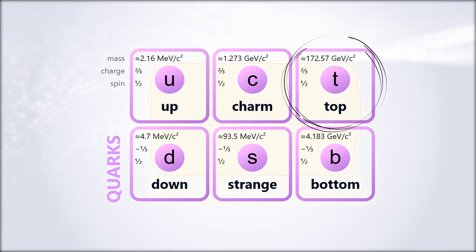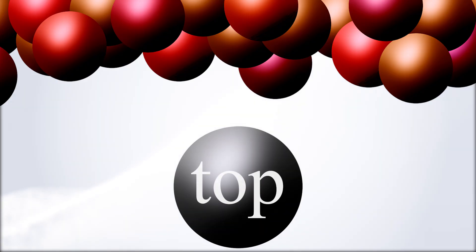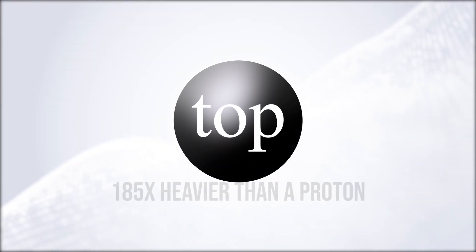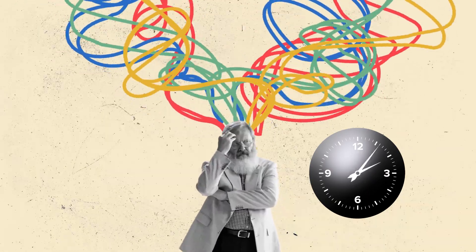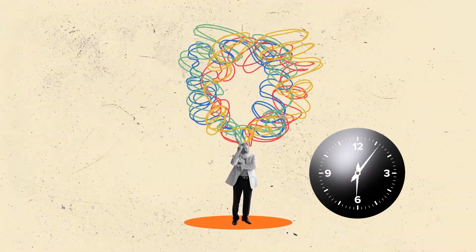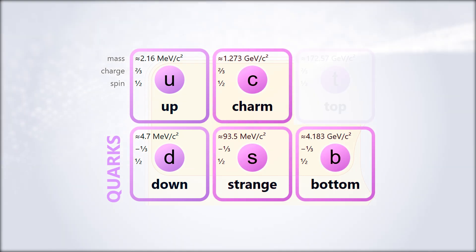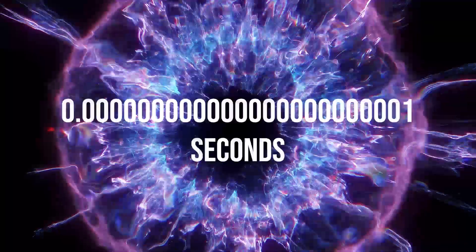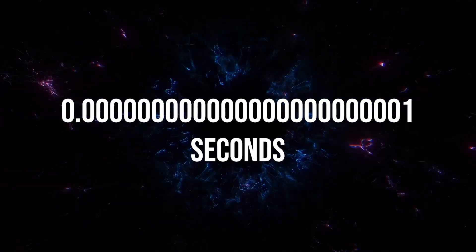The top quark is the heavyweight of the family. It's the most massive of all known elementary particles—about 185 times heavier than a proton. But here's the twist. It's also the most short-lived. It decays almost instantly after being created, within less than a yoctosecond. That's one septillionth of a second.